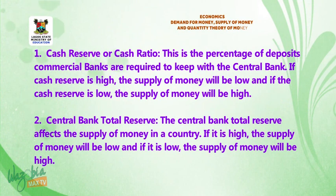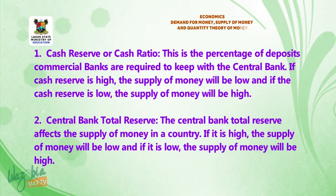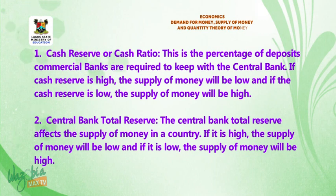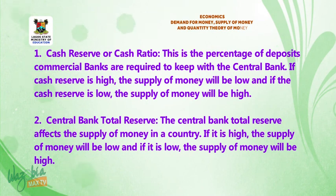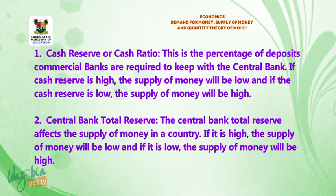Two: cash reserve or cash ratio. This is the percentage of the deposits commercial banks are required to keep with the Central Bank. If the cash reserve is high, the supply of money will be low. And if the cash reserve is low, the supply of money will be high.